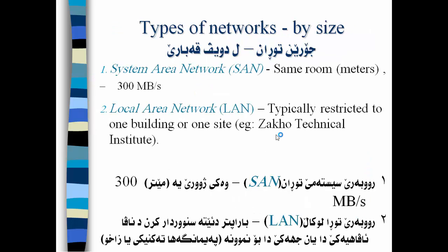Types of Networks by size: System Area Network (SAN) — same room, measured in meters, 300 megabytes per second. Local Area Network (LAN) — typically restricted to one building or one site, for example a technical institute.